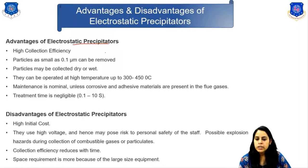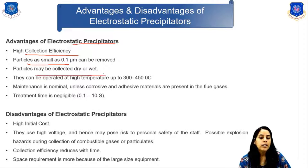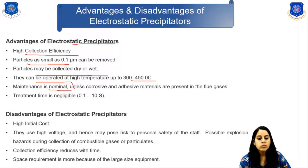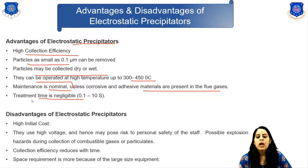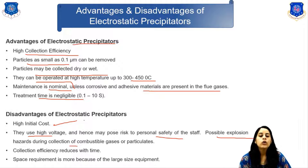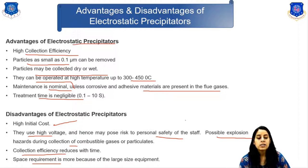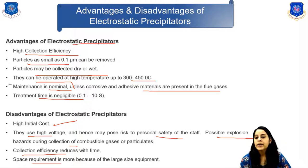Advantages of the electrostatic precipitator include high collection efficiency, removal of particles as small as 0.1 micrometer, collection of particles either dry or wet, operation at high temperatures of 300 to 450 degrees Celsius, and negligible treatment time with nominal maintenance unless corrosive or adhesive materials are present. Disadvantages include high initial cost, use of high voltage posing risk to personal safety and possible explosive hazard with combustible gases, collection efficiency decreasing with time, and large space requirements. They are widely used in thermal power plants, paper and pulp industries, cement factories, mining, iron and steel, and chemical industries.